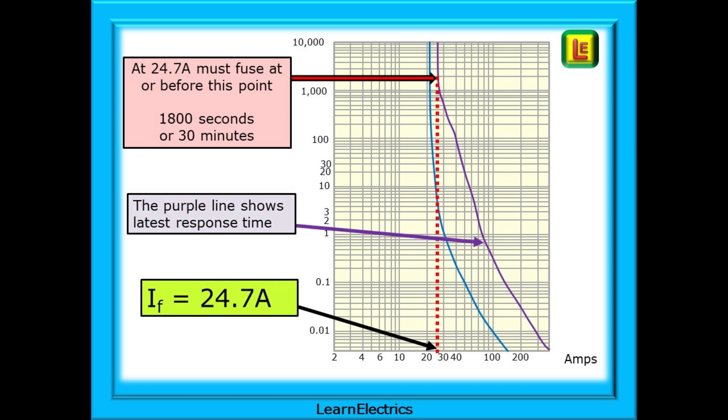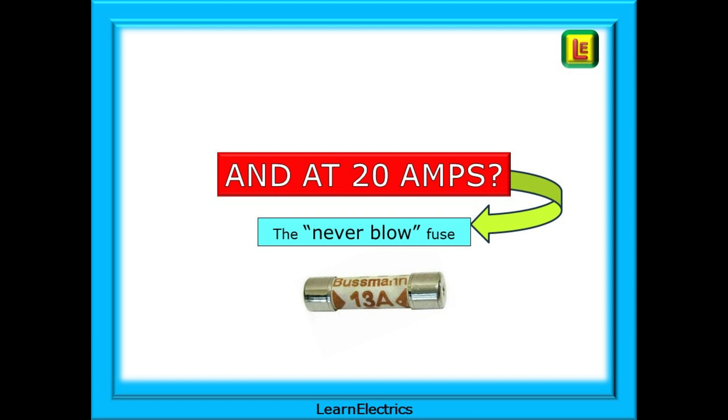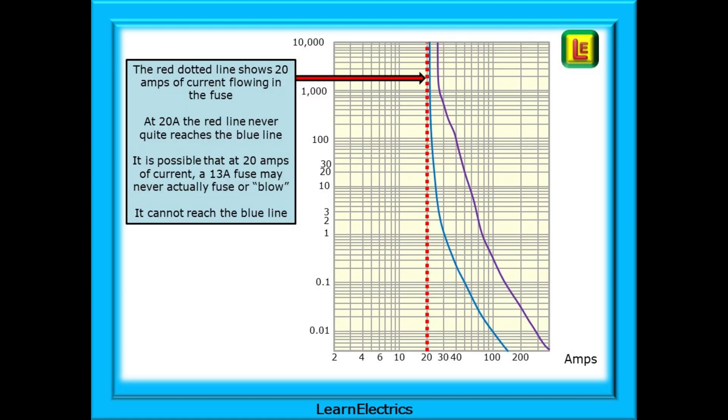Now look at IF the fusing current and the purple line. Follow the red line up from 24.7 amps and it meets the line at 1800 seconds or 30 minutes again. The British standard says that the fuse must blow at or before this line. And at 20 amps what happens there? Our 13 amp fuse is a never blow fuse. Let's look. The red dotted line shows 20 amps of current flowing in the fuse. At 20 amps the red line never quite reaches the blue line.